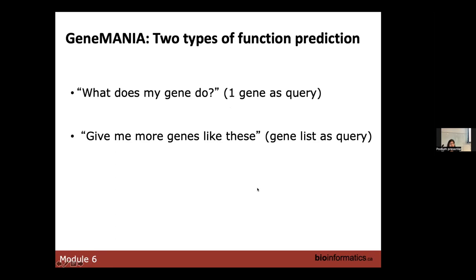GeneMania answers two types of questions. The first is when you input one gene — the question you are trying to answer is: what does my gene do? You can also input a few genes, like 10 genes, and then the question you want to answer with GeneMania is: give me more genes like this.